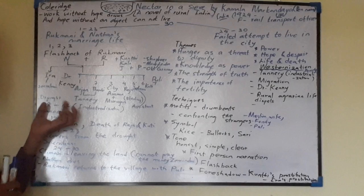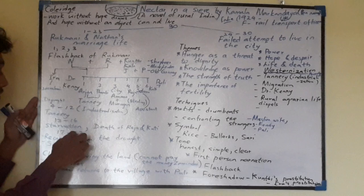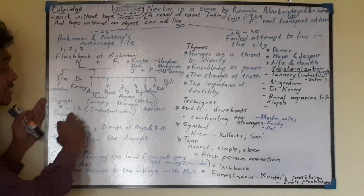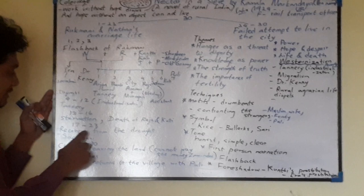The story usually consists of starvation, drought, nature, and the condition of rural India. A significant part is the introduction of the tannery, which symbolizes the encroaching industrialization of Indian society. The deaths of Raja and Kuti bring out this misery of life and the theme of despair.